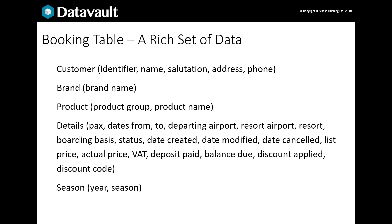What is held in a booking table? Usually there's information about customers, the brand the booking is for, the product that was sold, the details of the holiday and payments, and the timing of the holiday. The only reason they are together is they are provided when bookings are made. There's no reason why we need to hold brand information with seasons or holiday dates.